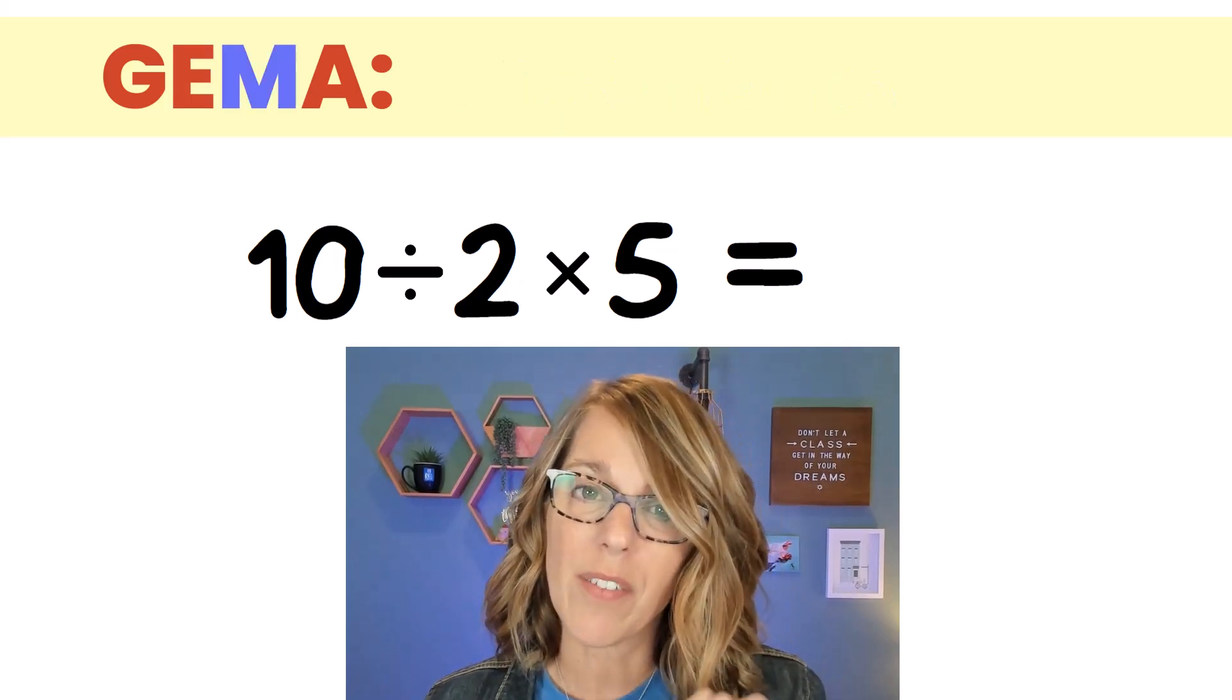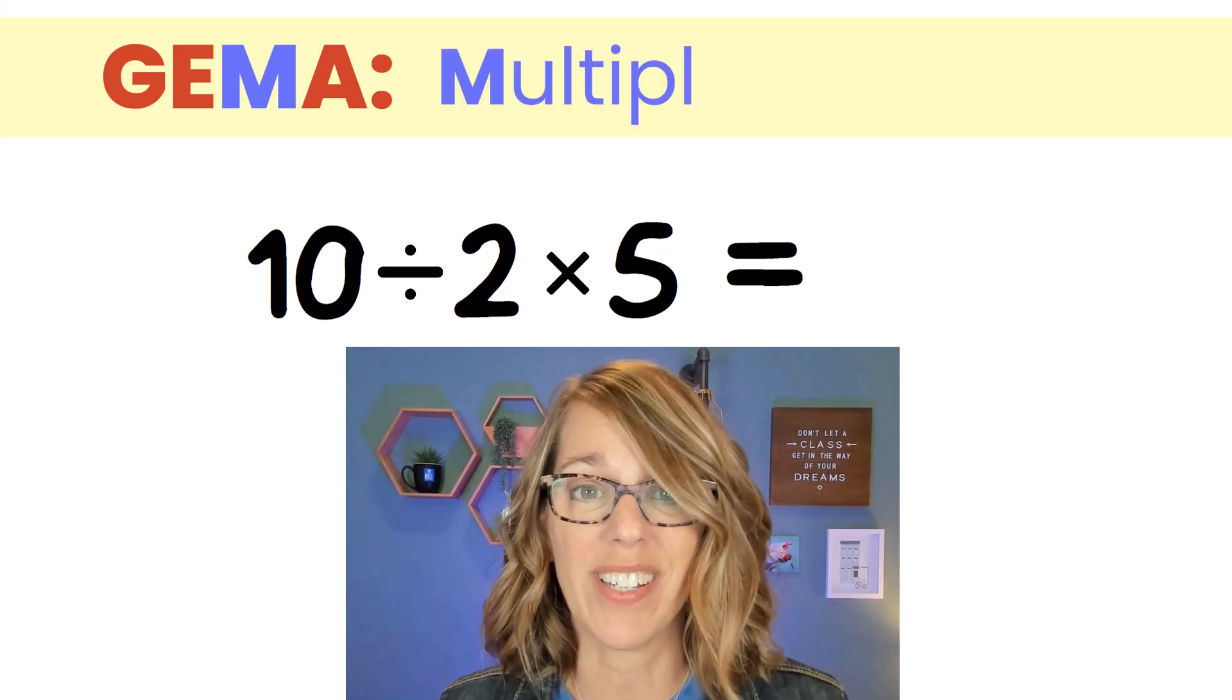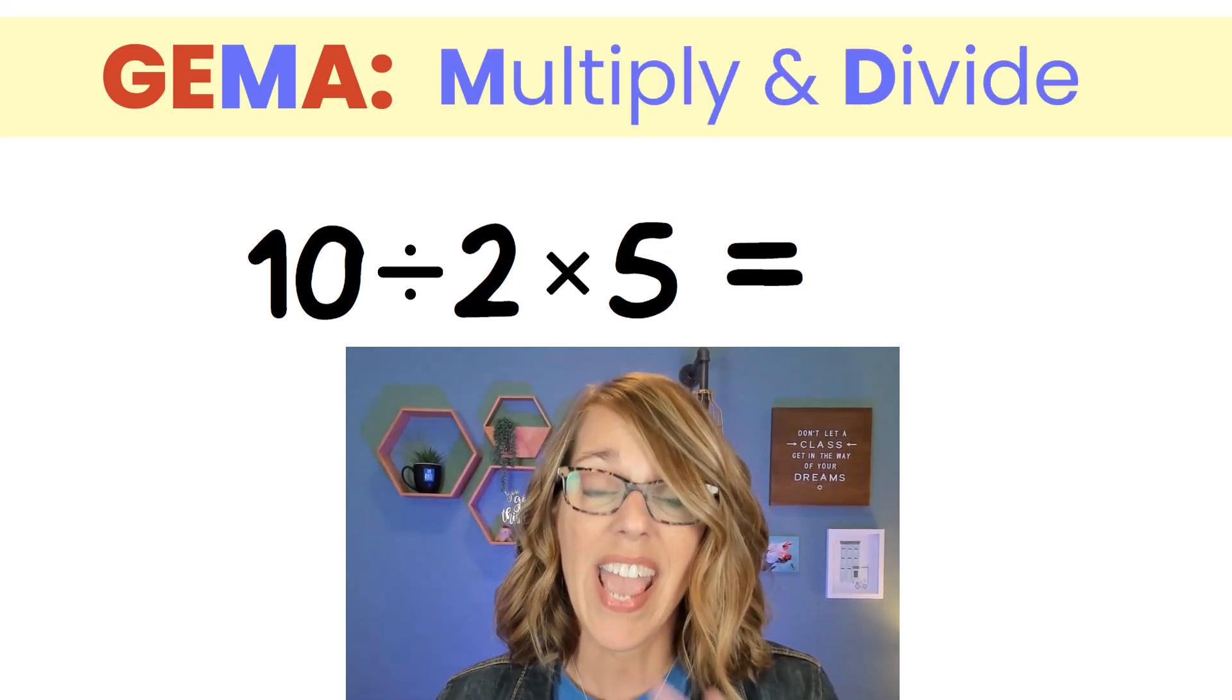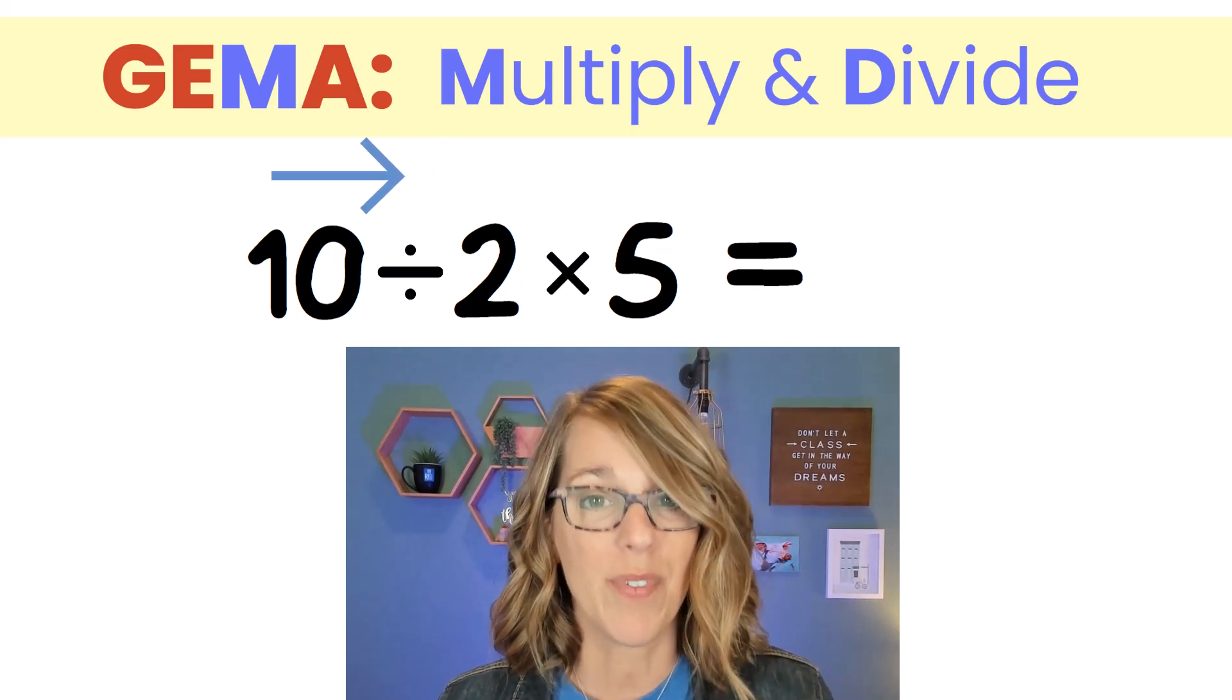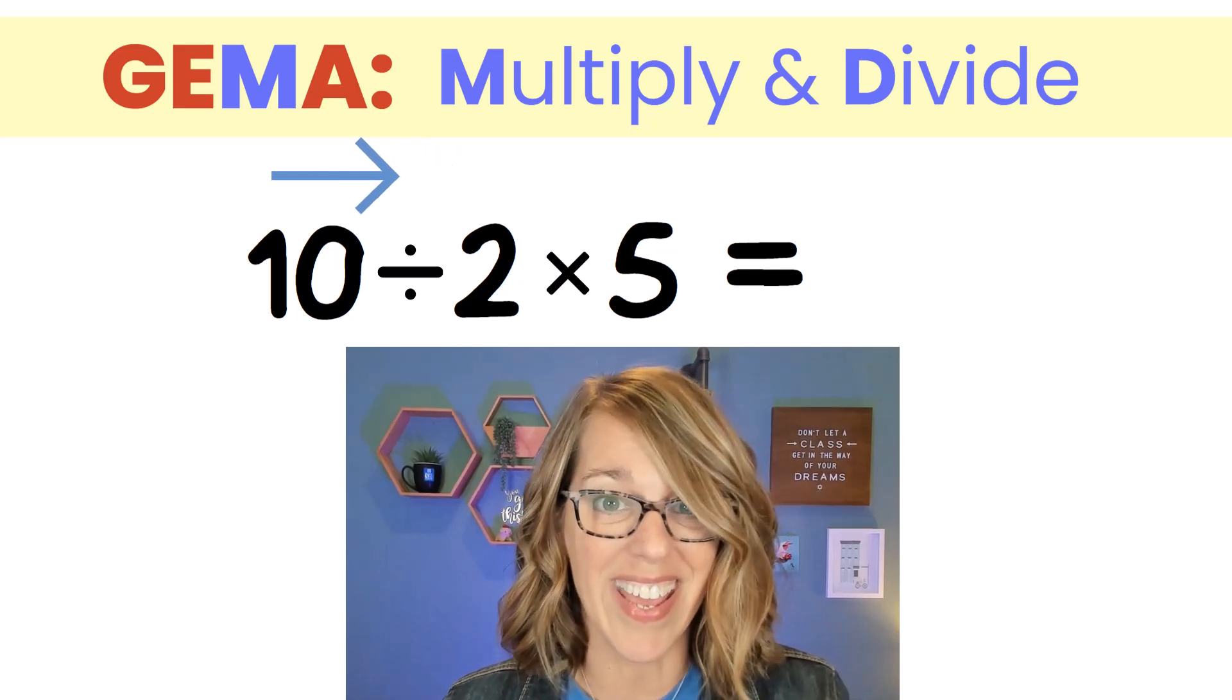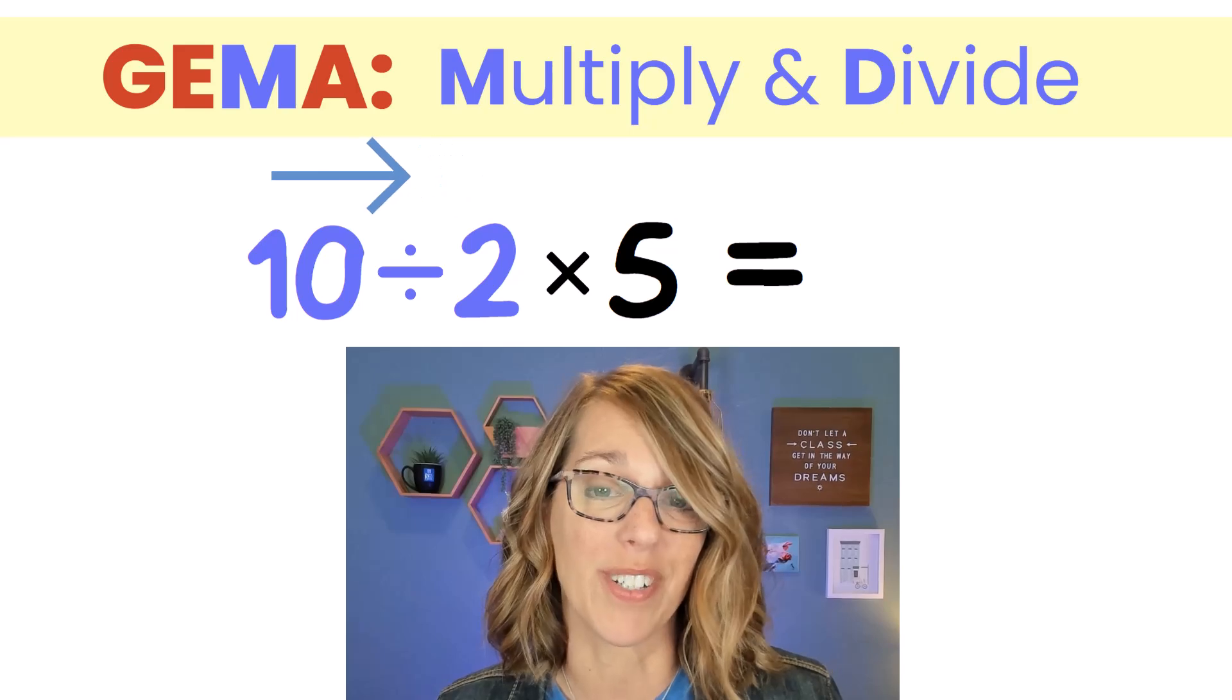Now M does stand for multiply, but it's also its companion operation, so it stands for multiply and divide. We're going to do whichever one we come across moving from left to right. So I'm going to start at that 10, and that means that I want to do 10 divided by 2 first.